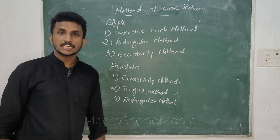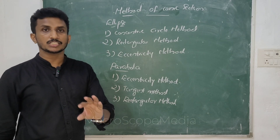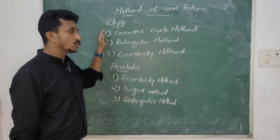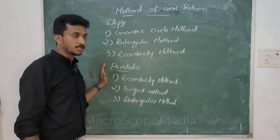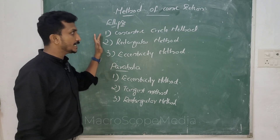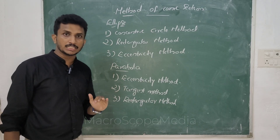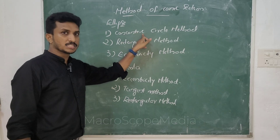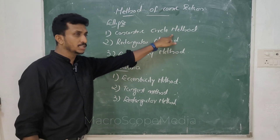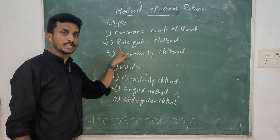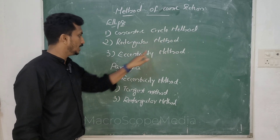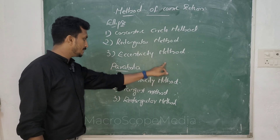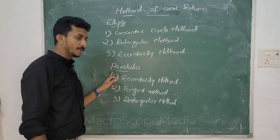In the polytechnical method, the ellipse can be drawn using the concentric circle method, the rectangular method, and the eccentricity method.